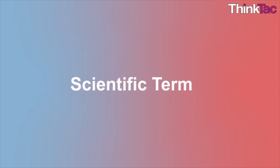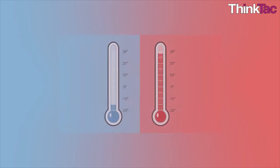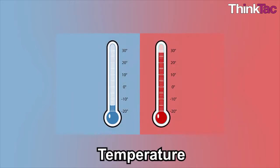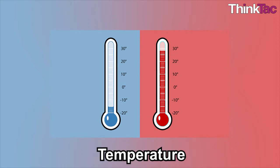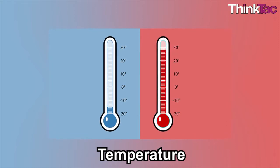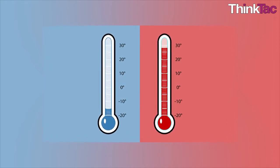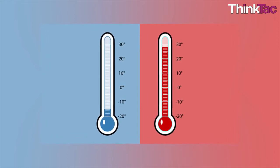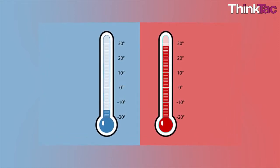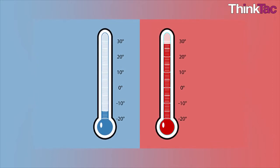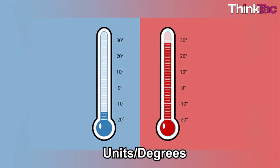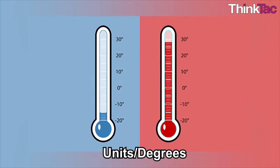Some scientific terms. Temperature may be defined as how hot or cold an object is. It is a statistically average measure of the kinetic energy of the particles in a piece of matter, and can be expressed in units or degrees on a standard scale.